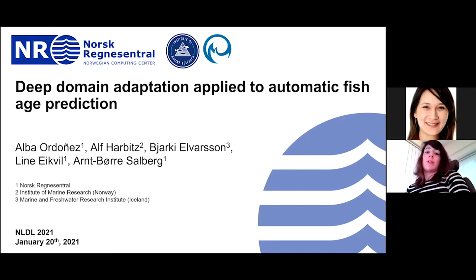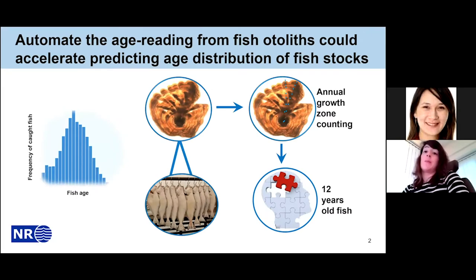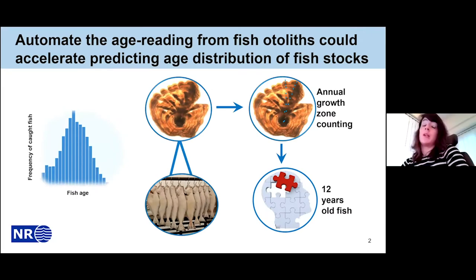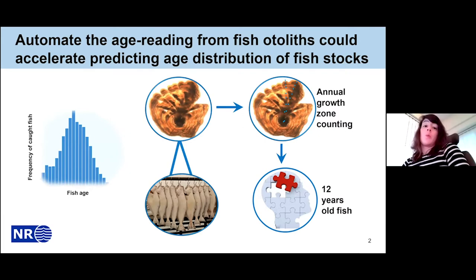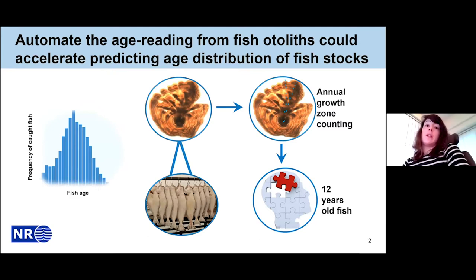As a motivation behind this work, you may know that in marine research and fisheries management, the estimation of the age distribution of fish stocks is very important in order to maintain sustainable fisheries. One of the procedures used for age reading requires experts to analyze the calcified structures located in the inner area of the fish, which are called otoliths.